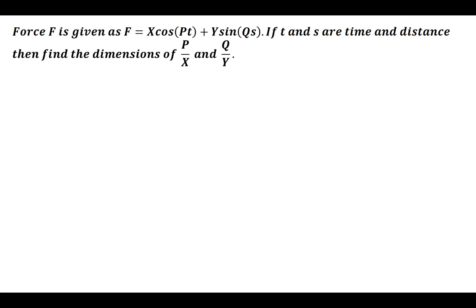Welcome to today's tutorial. We're going to be discussing this question: the force F is given as F equals x·cos(pt) plus y·sin(qs). If t and s are the time and distance, then find the dimensions of p over x and q over y.